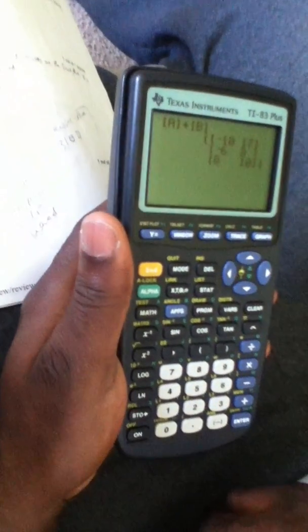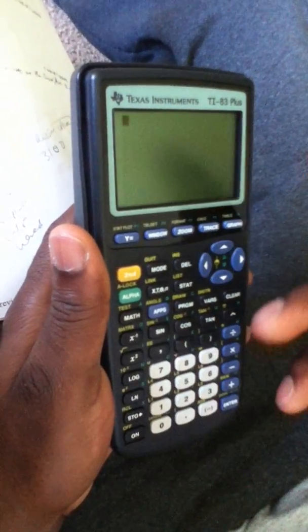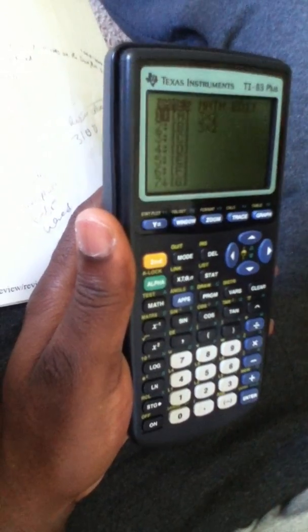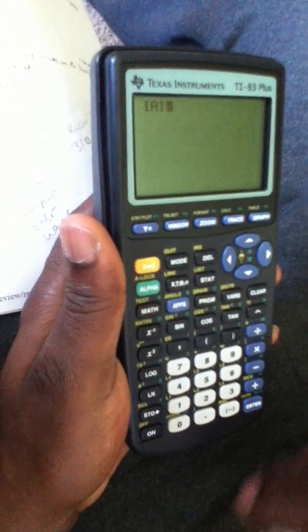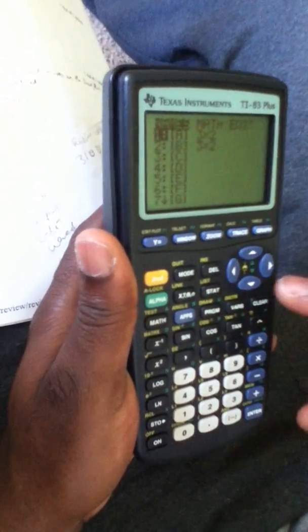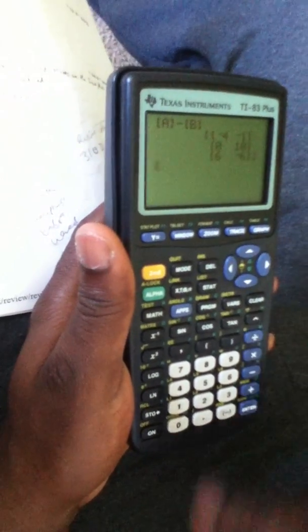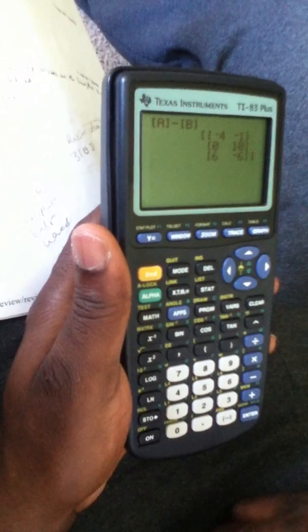You get your answer: minus 10, 17, minus 6, 8, 8, 10. Now the same procedure: if you want to solve a subtraction, we have our data already inputted, so just click on A again. Now instead of addition, you just click on subtraction, go back to matrix, down to enter, enter. There's your answer for subtraction.